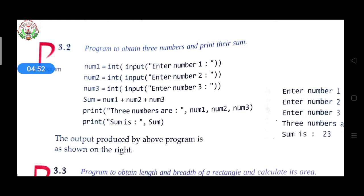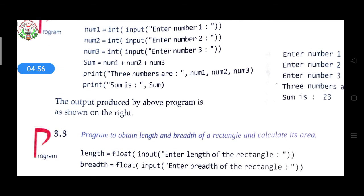We declare one more variable named 'sum'. You can write any variable name — it's your choice — but other programmers should understand what you declared. num1, num2, num3 are understandable, and 'sum' is also understandable because all three numbers' total will be stored in it. So: sum = num1 + num2 + num3.